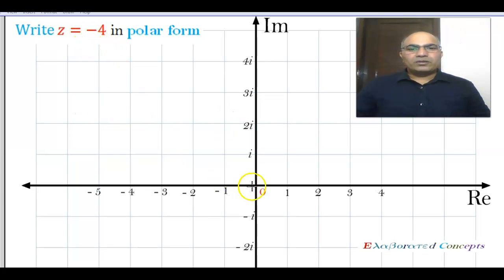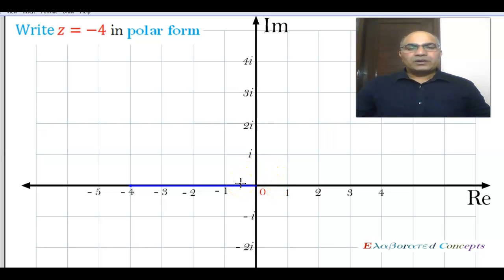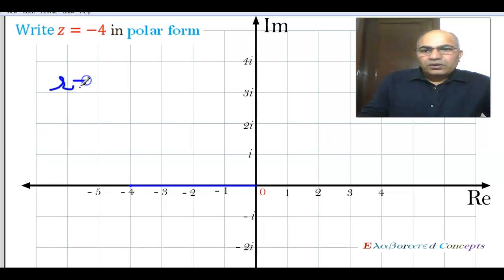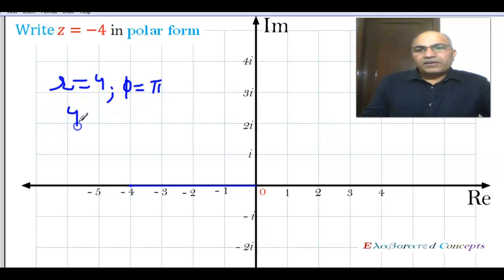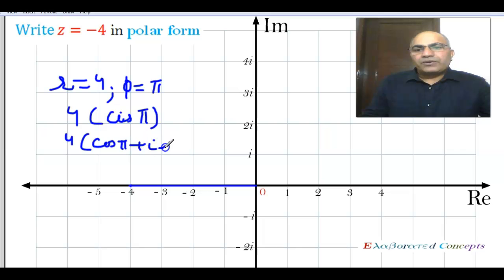For Z = −4: its vector goes from 0 to −4 on the real axis. This vector makes an angle of π with the positive X-axis. Therefore its argument is π and its modulus is 4. So R = 4 and φ = π. Its polar form in short is 4 cis π, which equals 4(cos π + i sin π).